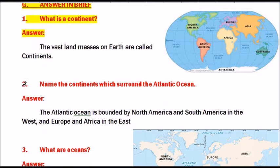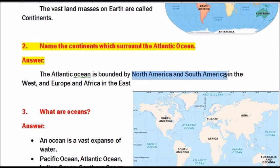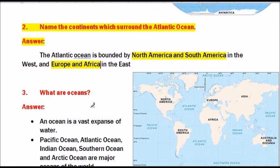Question number 2: Name the continents which surround the Atlantic Ocean. The Atlantic Ocean is bounded by North America and South America in the west, and Europe and Africa in the east.